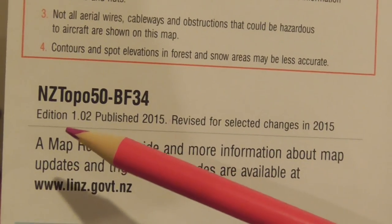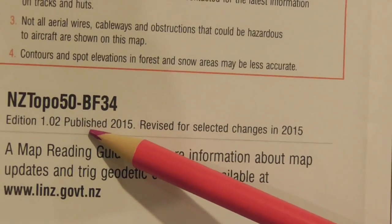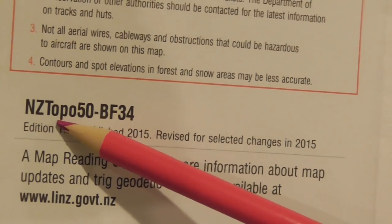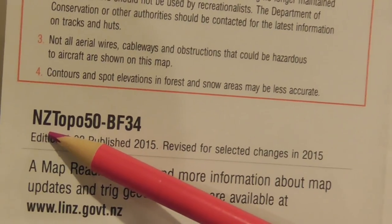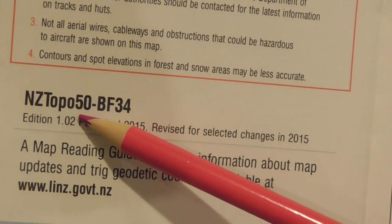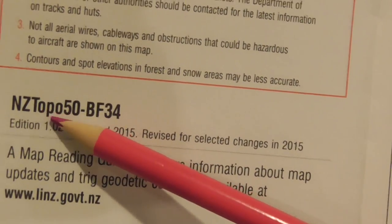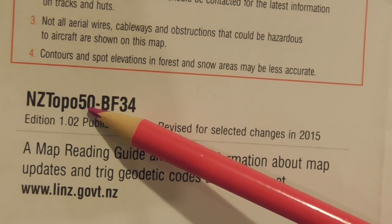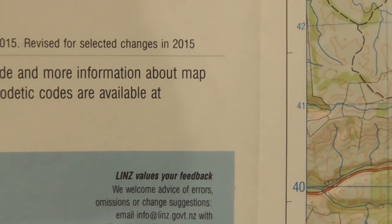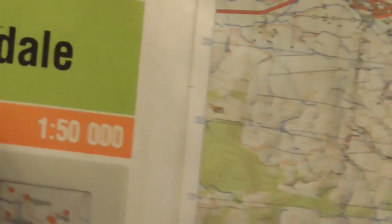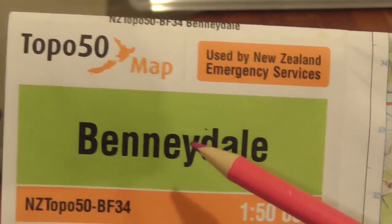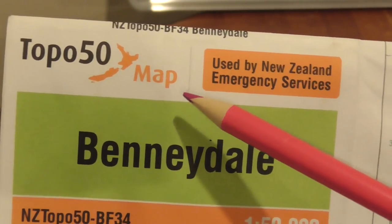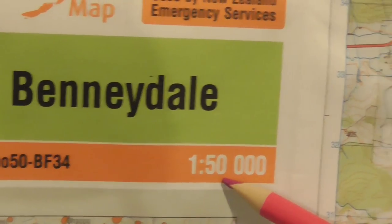This type of map is called an NZ Topo 50 map. The NZ just stands for New Zealand, where I am. The Topo is short for topographical, and 50 means the map is a 1-in-50,000 scale map. So for every one centimetre on the map, that represents 50,000 centimetres on the actual ground — which is approximately 500 metres on the ground.